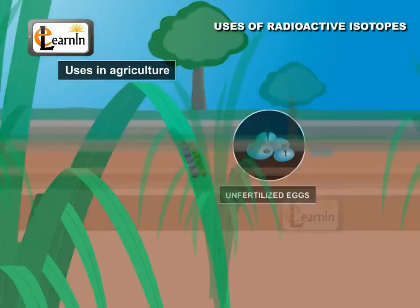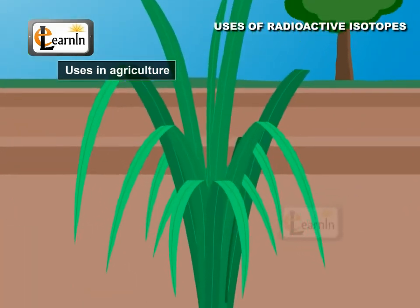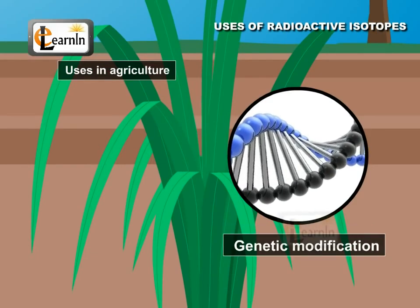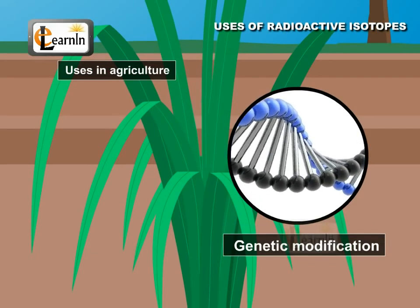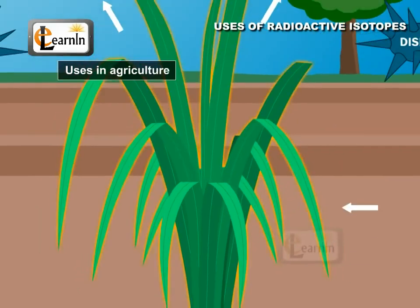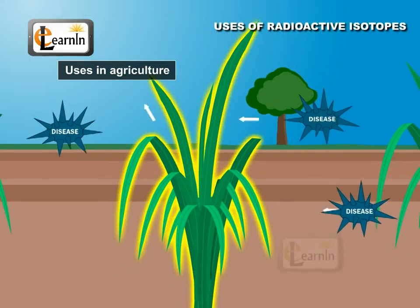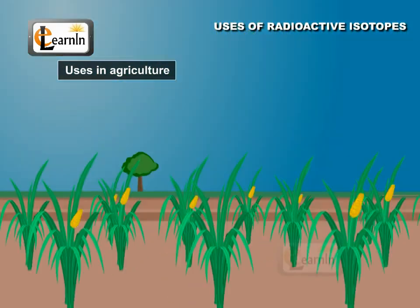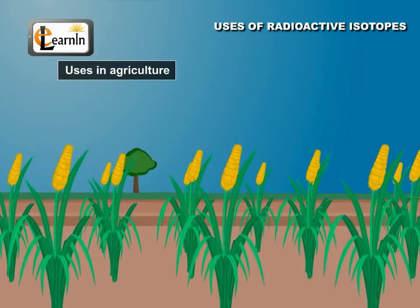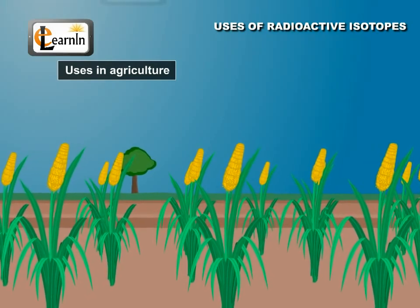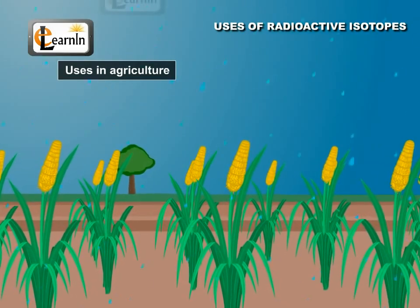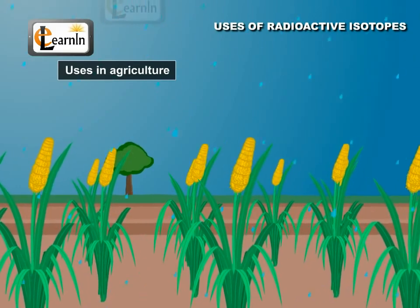Another agricultural use of radioisotopes is the genetic modification of plants and animals. Here, it is used to confer high resistance to pests and disease, early maturing, improved productivity, high nutritional value, climate resistance, adaptation, etc.